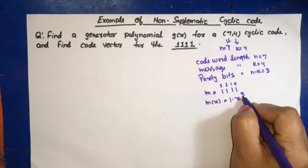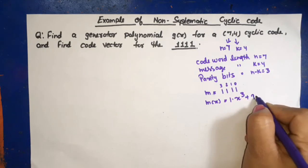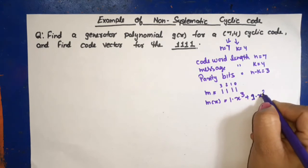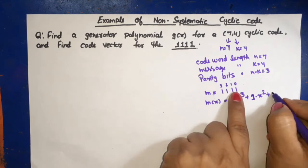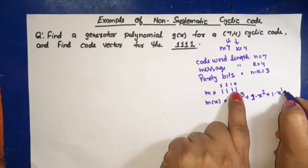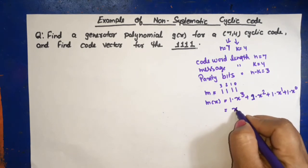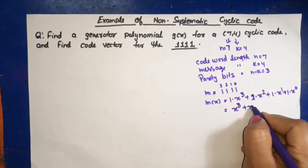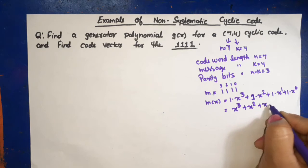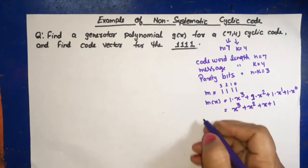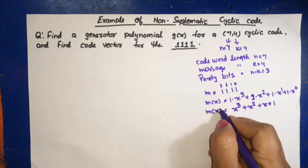This one dot x raised to power 3 plus 1 dot x raised to power 2 plus for this one dot x raised to power 1 plus one dot x raised to power 0. This can be written as x raised to power 3 plus x square plus x plus 1.